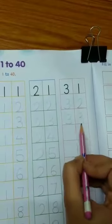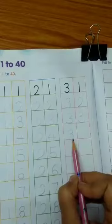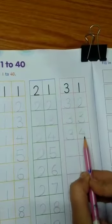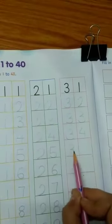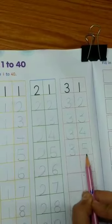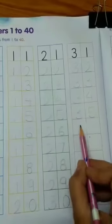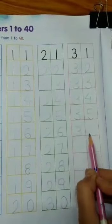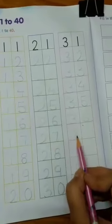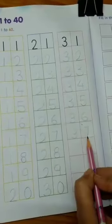3, 3, 33. 3, 4, 34. 3, 5, 35. 3, 6, 36. 3, 7, 37.